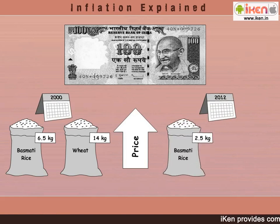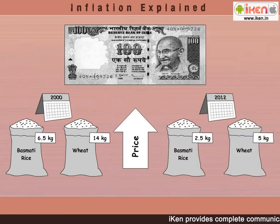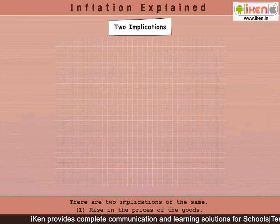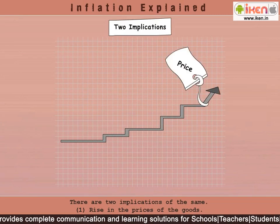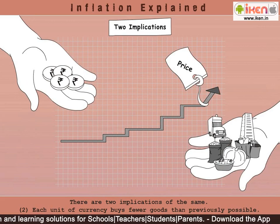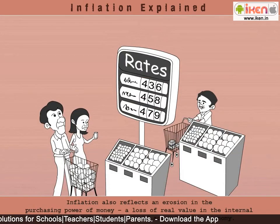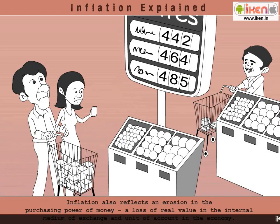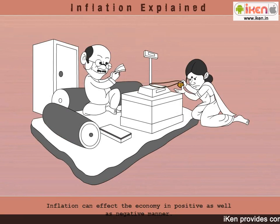But due to the rise in prices, in the year 2012 only two and a half kilograms of rice or five kilos of wheat could be bought. There are two implications: first, a rise in the prices of goods, and second, each unit of currency buys fewer goods than previously possible. Consequently, inflation also reflects an erosion in the purchasing power of money — a loss of real value in the medium of exchange and unit of account in the economy.